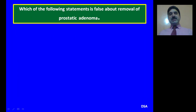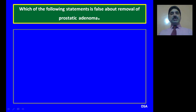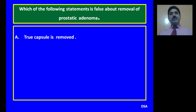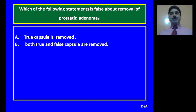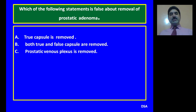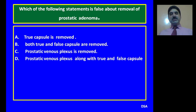Question 4: Which of the following statements is false about removal of a prostatic adenoma? A. True capsule is removed. B. Both true and false capsules are removed. C. Prostatic venous plexuses are removed. D. Prostatic venous plexuses along with true and false capsules are kept intact. D is the correct option.